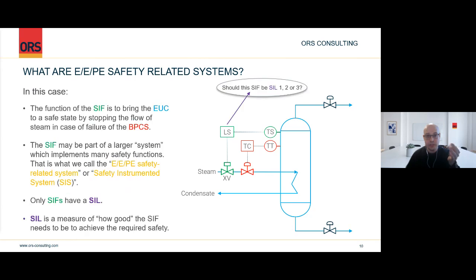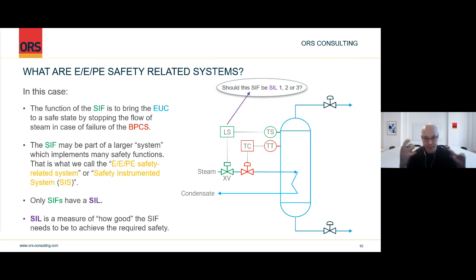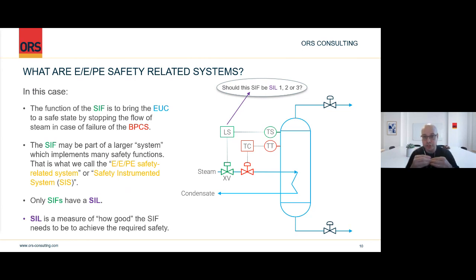So what is SIL? SIL is basically how good that safety instrumented function needs to be so that you can ensure functional safety and overall safety. When you combine that safety instrumented function with other protection layers in your system, that achieves overall safety. Functional safety requires that function to achieve the required SIL — not only during the design stage, but also during operation and maintenance. The SIL may be part of a bigger system, the safety instrumented system, within which there may be several safety instrumented functions, each one with a SIL — which could be SIL 1, SIL 2, SIL 3, or if something else is needed.